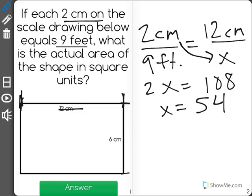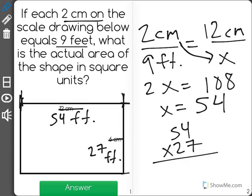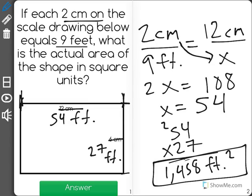So this has a length of 54 feet. When we do the same with 6, we'll see that it has a length of 27 feet. And to find the area, now we multiply 54 by 27 to get an answer of 1,458 feet squared.